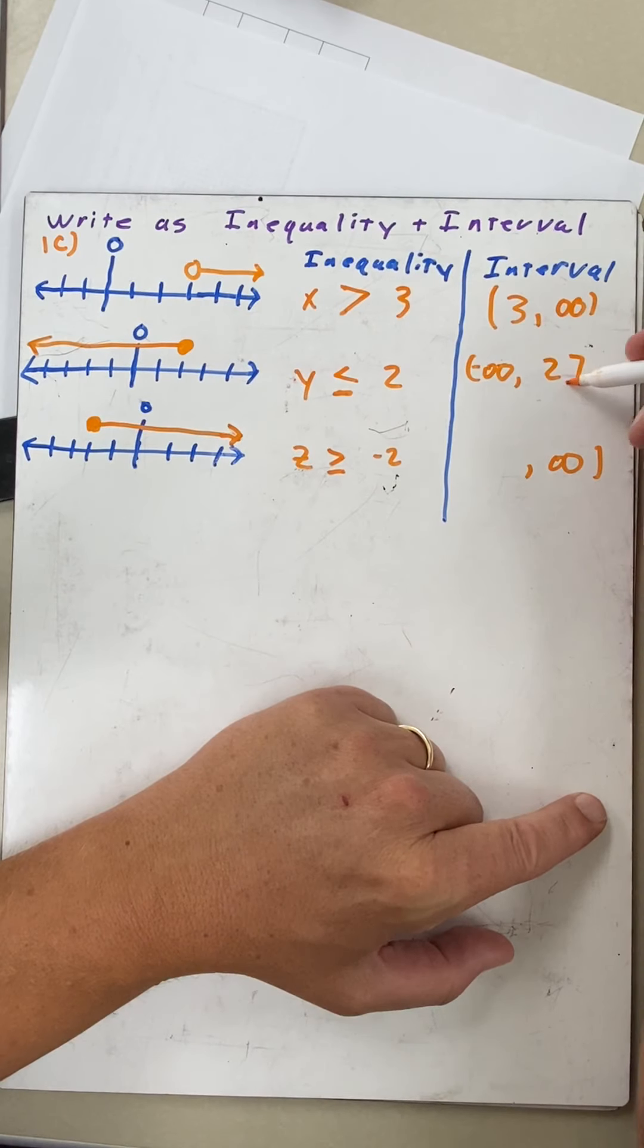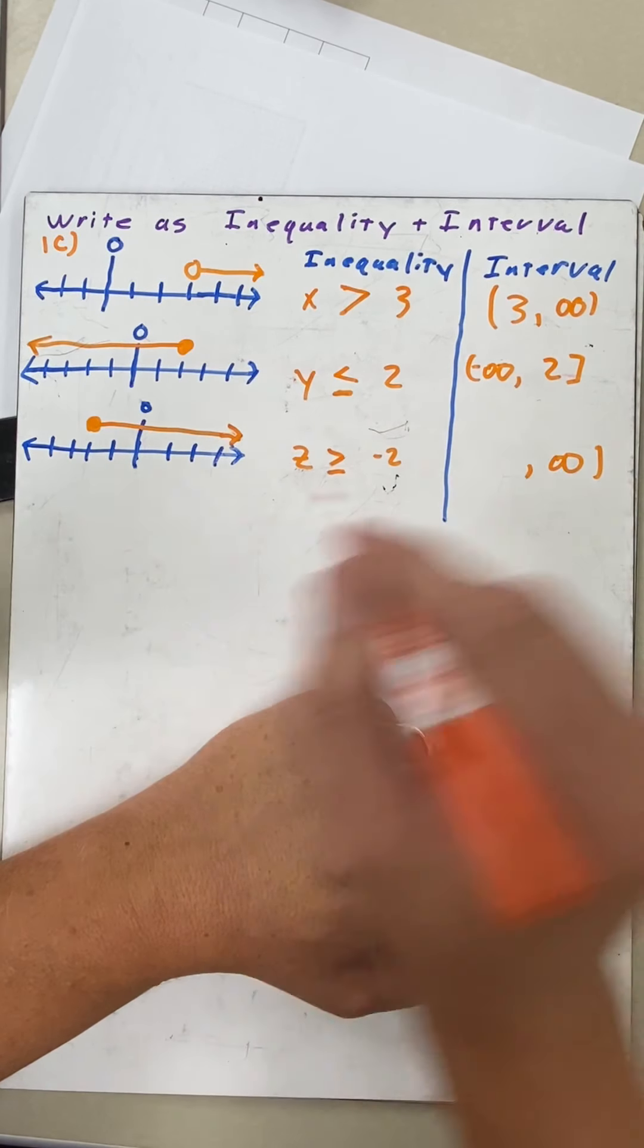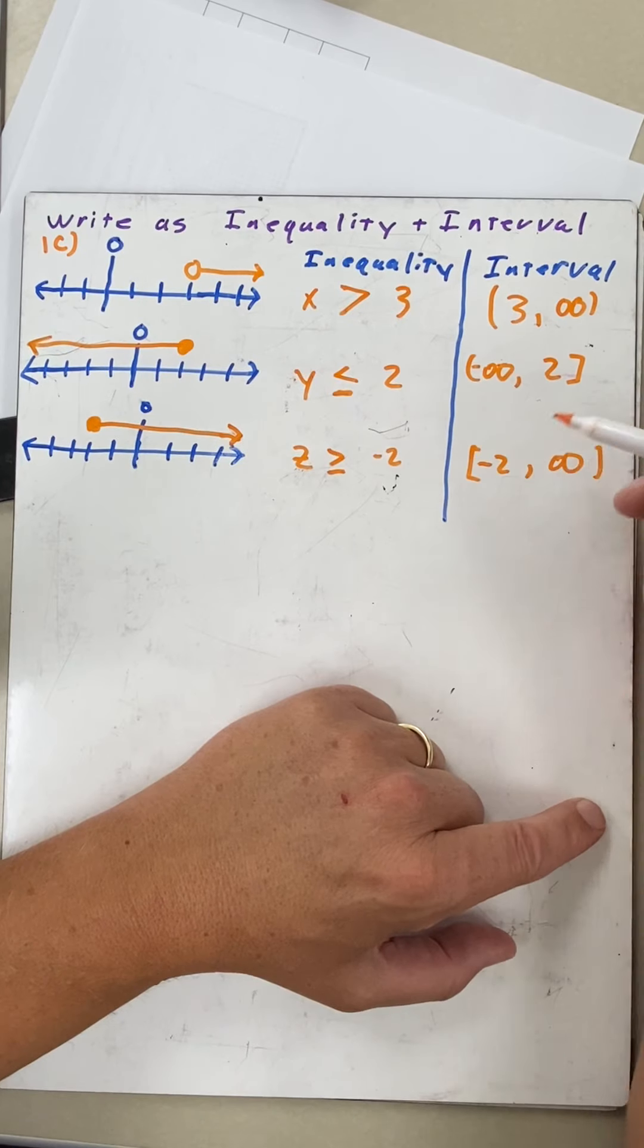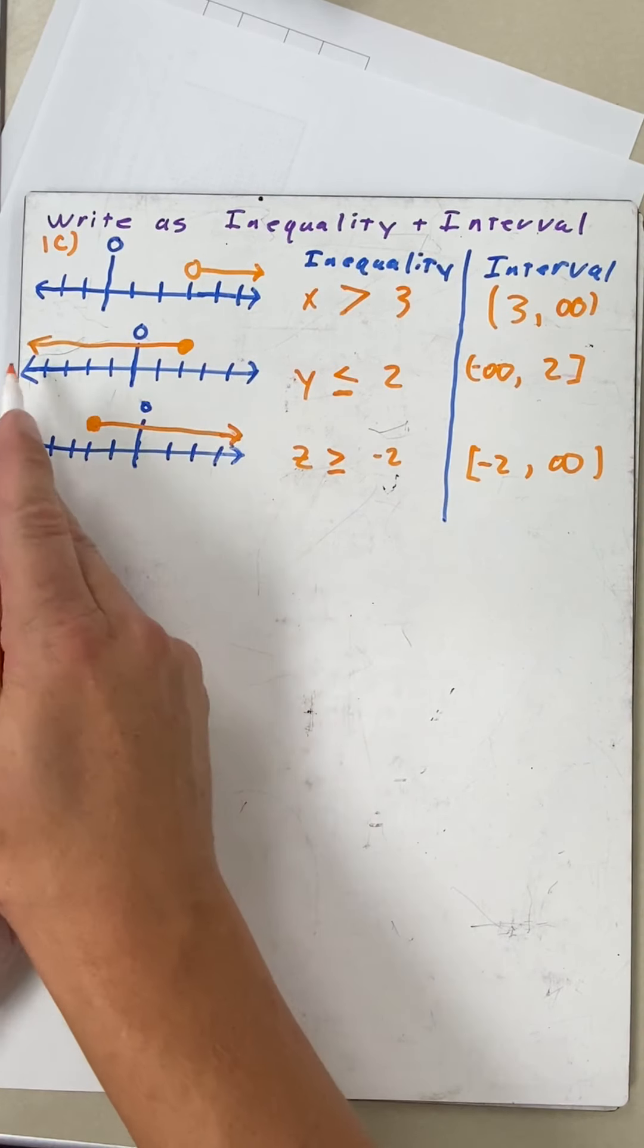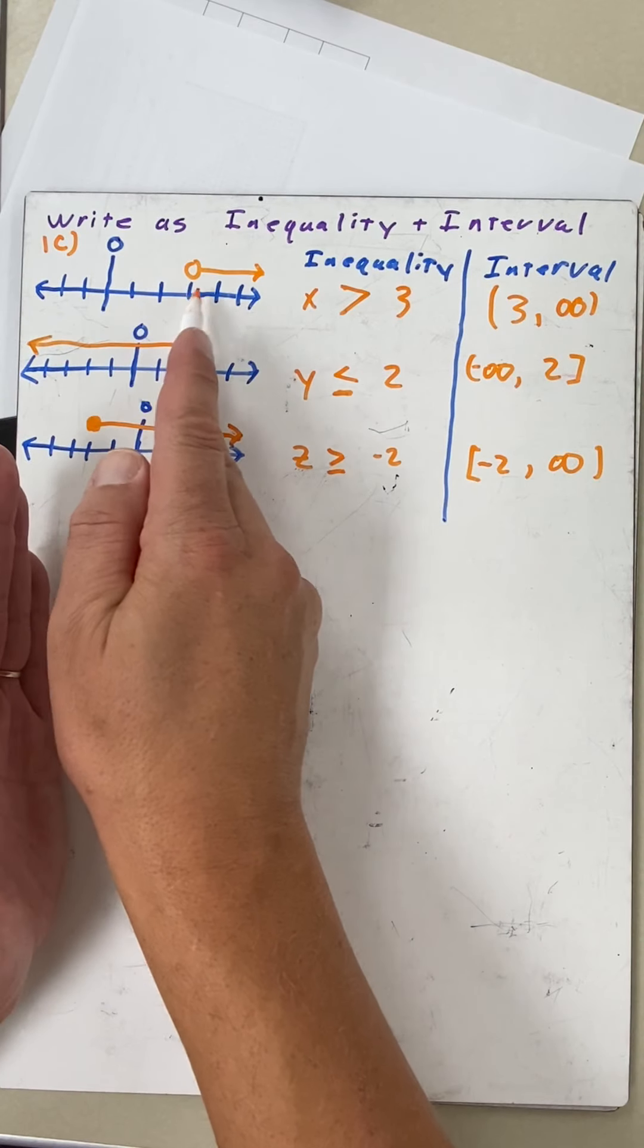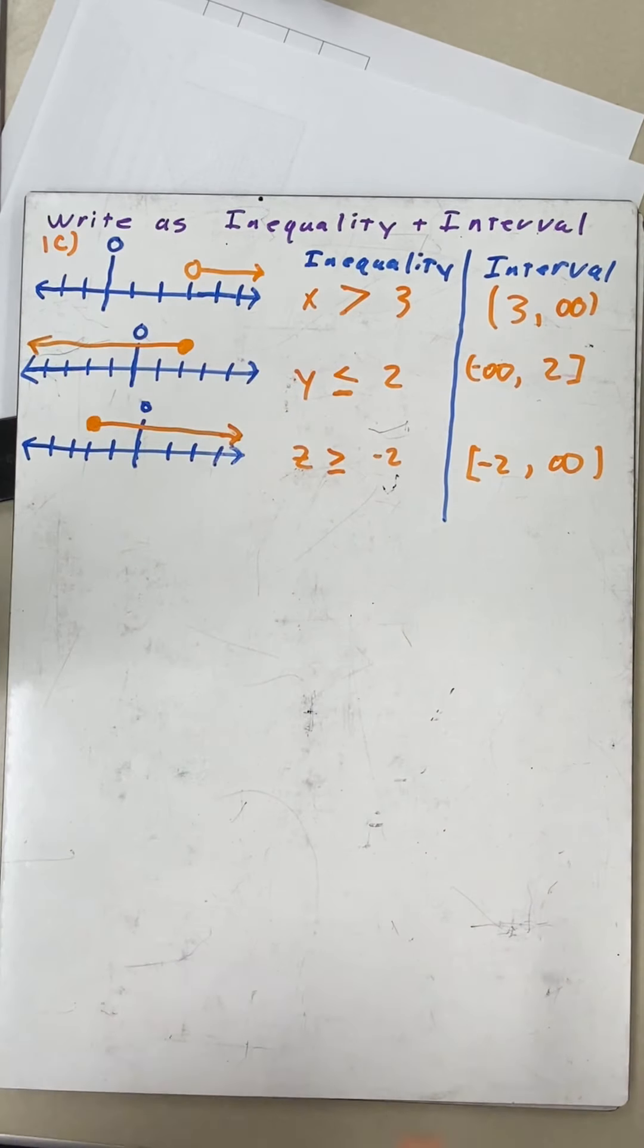Two is bracket, and negative two on the left is also a bracket. So once again, always remember for the intervals: left to right. Negative two to infinity, negative infinity to positive two, and three to positive infinity.